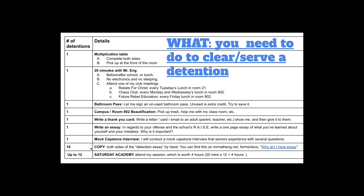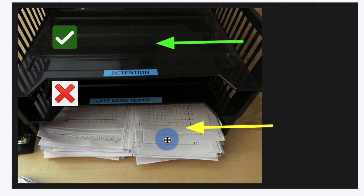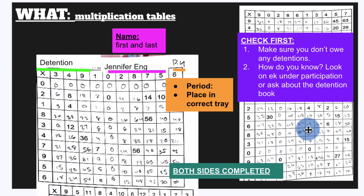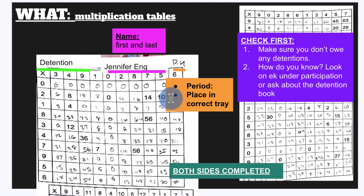If you have a lot of detentions — say like 10 — you can copy the detention essay from our website. You can also attend Saturday Academy; every 20 minutes counts. In front of the classroom there's a black tray — you'll pick up your multiplication tables there. When you're done, put it on the top tray that says 'detention.' Fill out both sides of the multiplication table — nine times nine is 81. First check that you owe detentions by looking under your cadence under participation or ask about the detention book. Write your first name, last name, your period, write the word 'detention,' and what it was for — earbuds, phone, video games, something — then put it back in the tray.